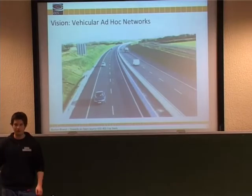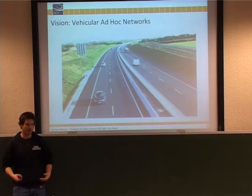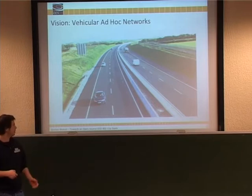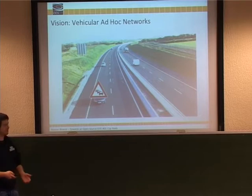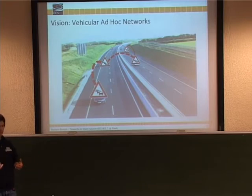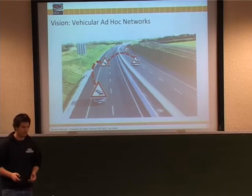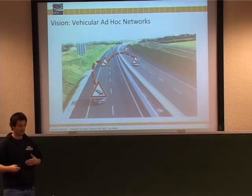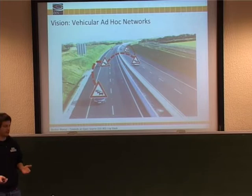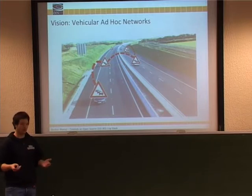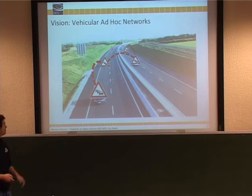Just to give you a very quick idea about what vehicular networks are about: there's this vision that cars are equipped with some radio module. If the guy in the front car realizes there is a traffic jam ahead, he has the possibility to communicate this to all the other cars around him, and you on another lane could pick up this information and bring it to someone in the very back. So you could make driving more safe because he's already alarmed that there is a jam, and you could maybe avoid rear-end crashes.